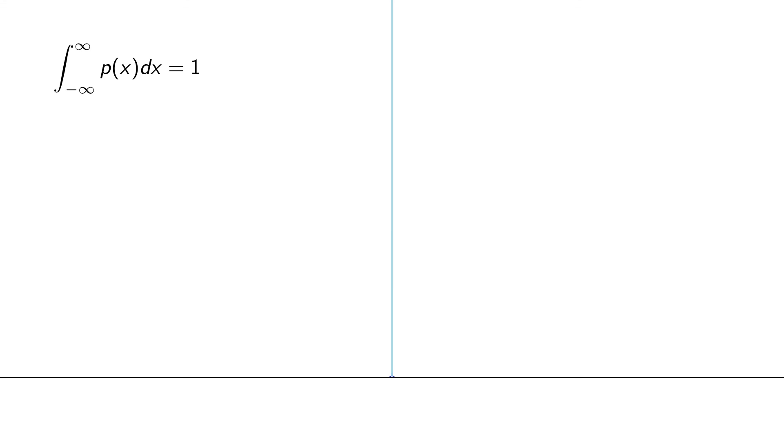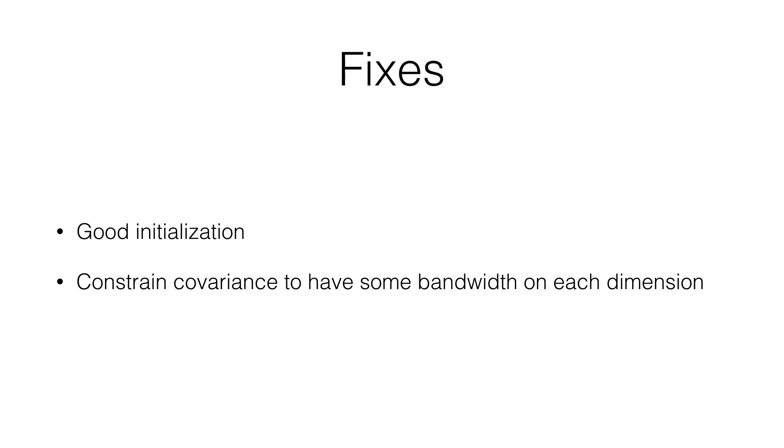So there's a few ways to fix this. And one is to just initialize well and hope that you don't get in a situation where the learning algorithm whether it's EM or some other algorithm can find its way toward one of these degenerate solutions or another way is you force the learning algorithm not to use covariances that are too small so you might constrain the covariance to always have some bandwidth in each dimension. So you would maybe make sure that all the entries on the diagonal are greater than some constant.